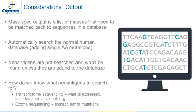Another critical consideration is the expected output of the experiment. Mass spec sequencing essentially provides a list of masses that must be matched to known proteins before they have any meaning. The default database against which peptide data are searched is the canonical species database from UniProt, which matches all normal proteins. Beyond this, the analysis program can search for single amino acid changes to address neoantigens derived from point mutations. However, more expansive mutations such as indels or translocation variants require addition of mutated sequences from transcriptome or exome sequencing.